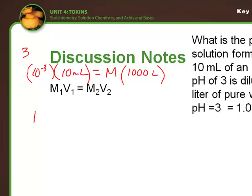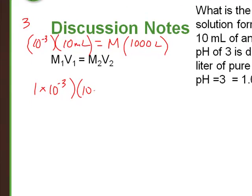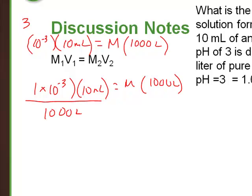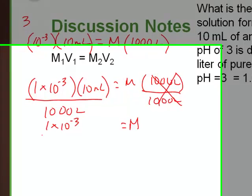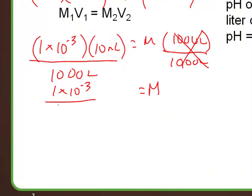So to solve this, I've got 1 times 10 to the negative 3rd times 10 milliliters equals the molarity times 1,000. To solve this, we divide each side by 1,000 liters. This cancels this out.